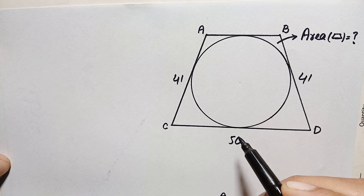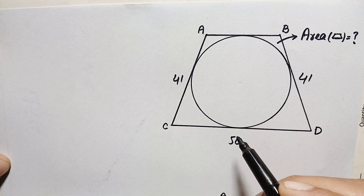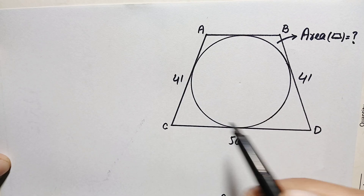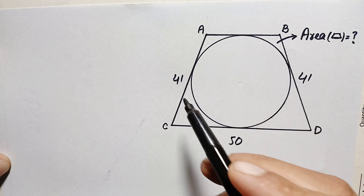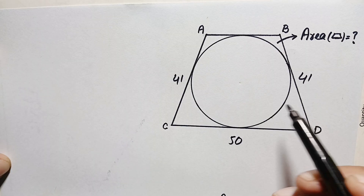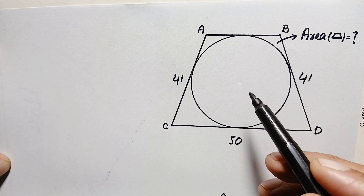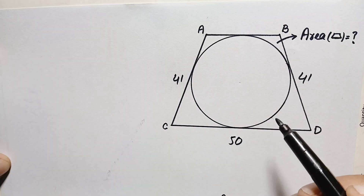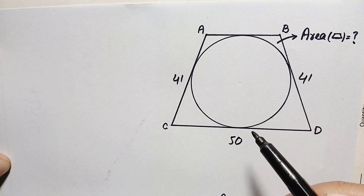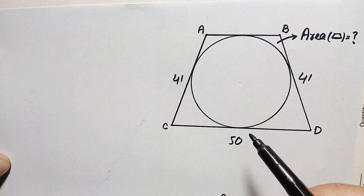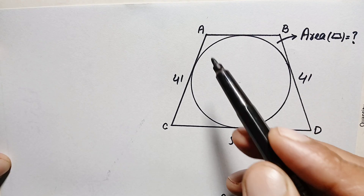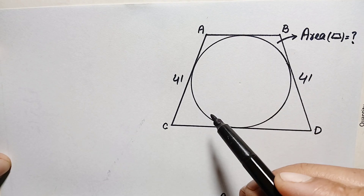Hello everyone, you are welcome. Today we have a very interesting geometric math problem. We are given a trapezoid whose three-sided lengths are given, where two sides are equal in length, and there is a circle inside the trapezoid. Our target is to find out the area of trapezoid ABCD. First, we will try to find out the fourth side as well as the height of this trapezoid.